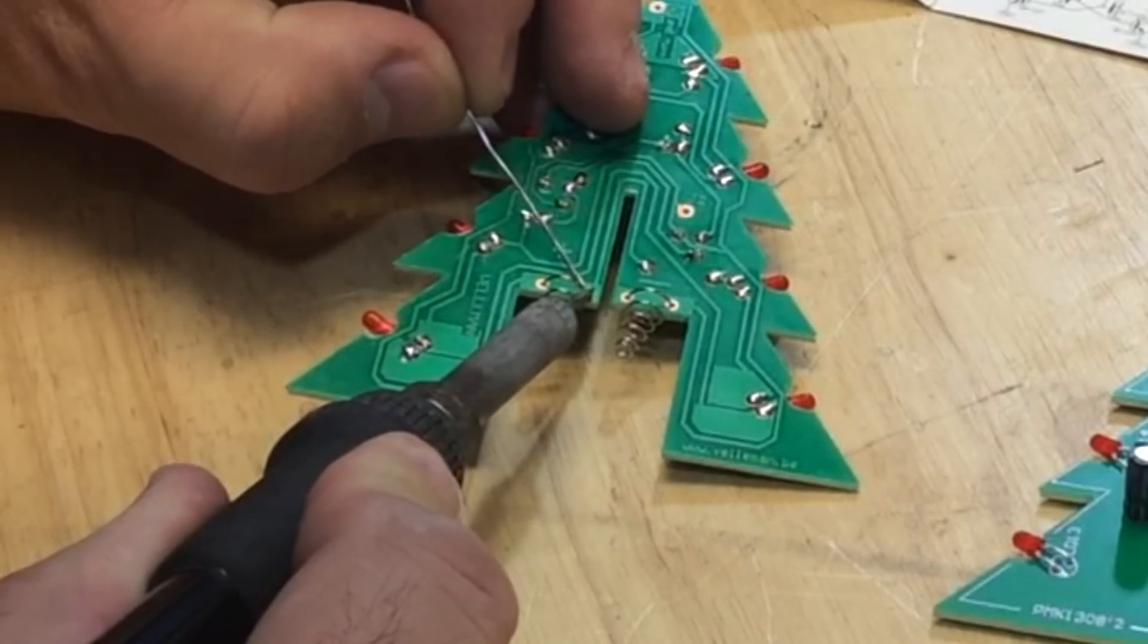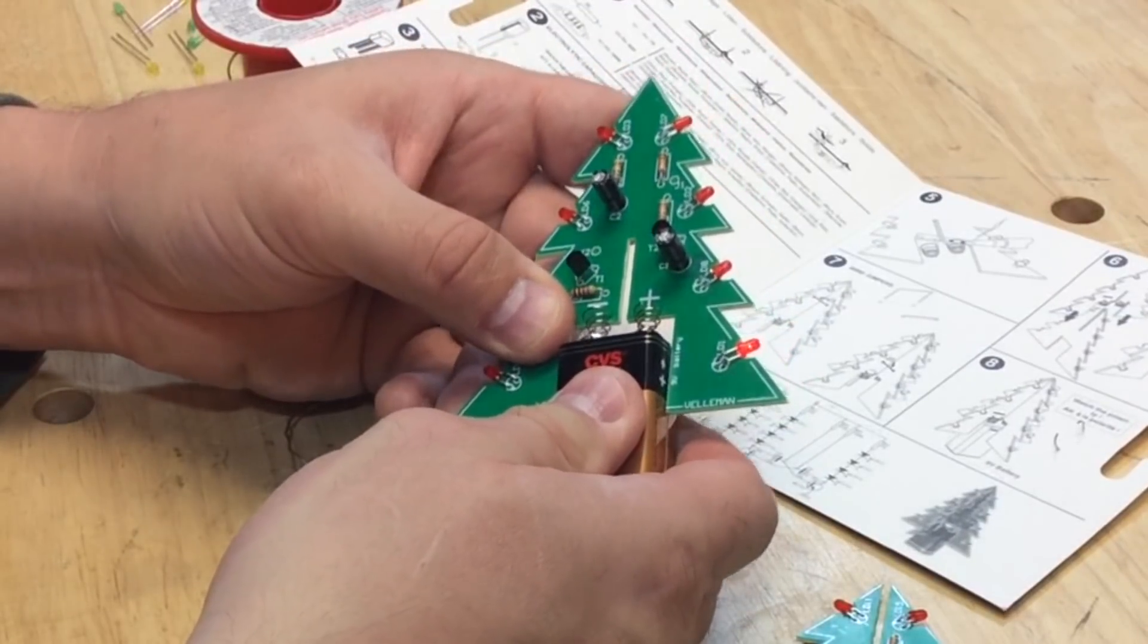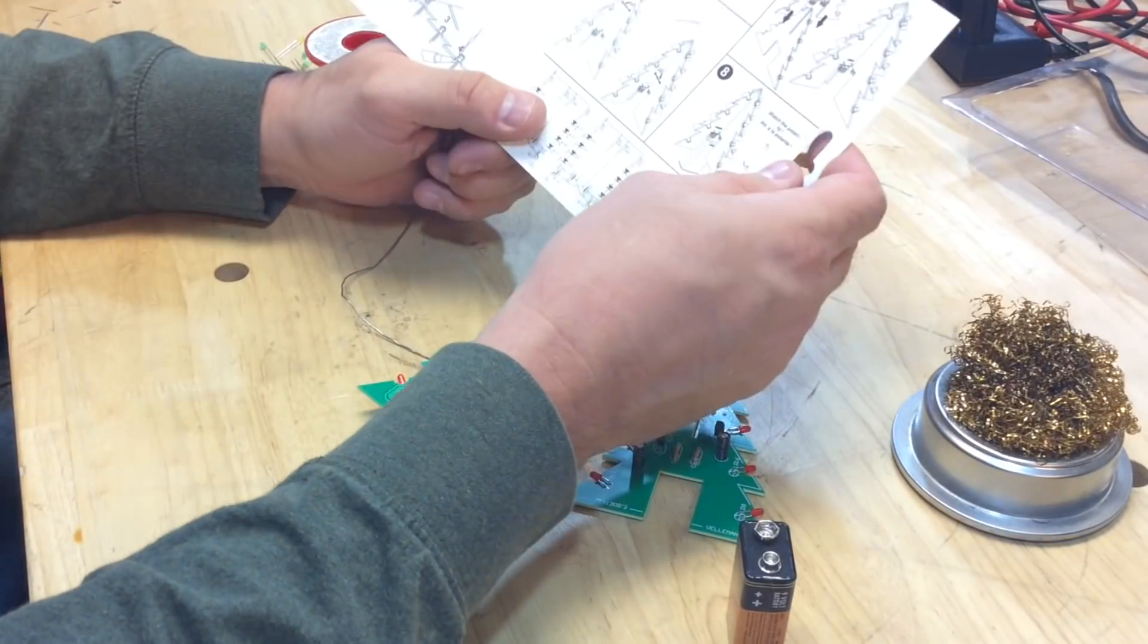Kind of hokey a little bit because it just sits on the battery. It doesn't really lock in, but once I had these soldered in place, I could test the board and you can see the LEDs flashing. It's a little bit dim because of the bright lights of the camera.